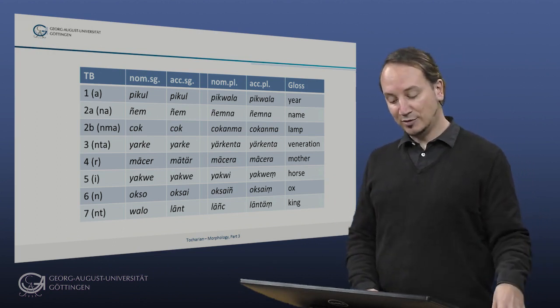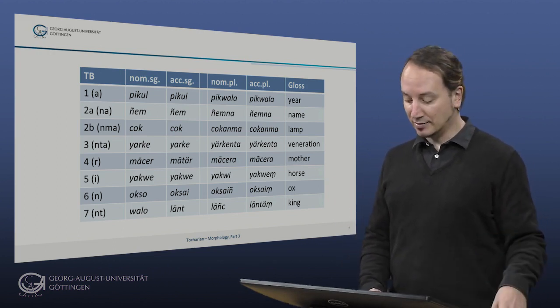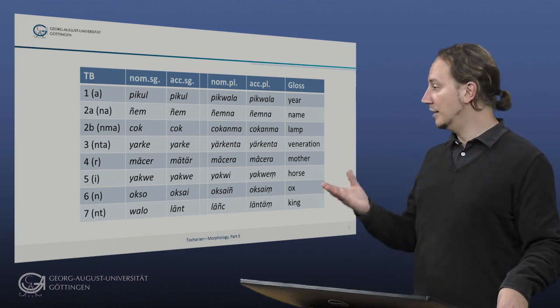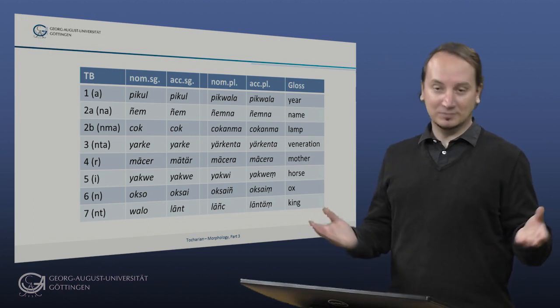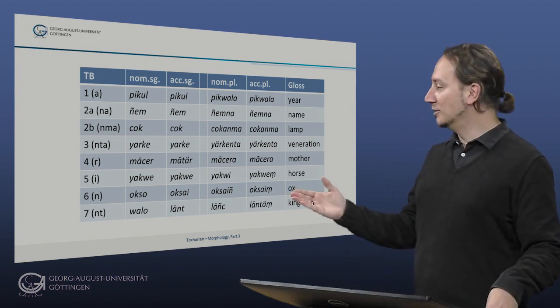The i-class, number five. We have yakwe, that's the horse word inherited from Indo-European, and we have the plural yakwi. And then okso 'ox', plural okṣaiṃ.